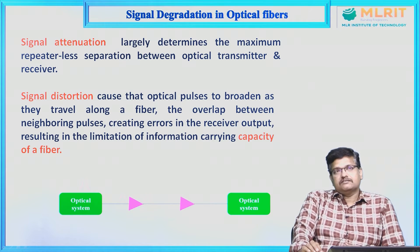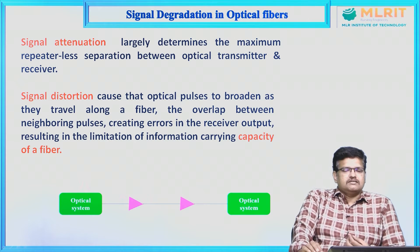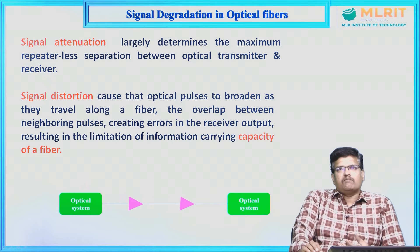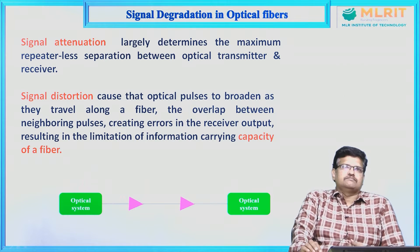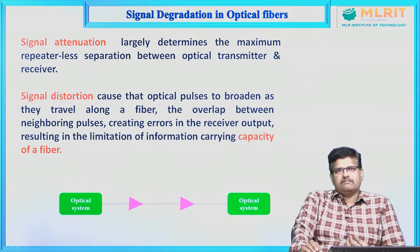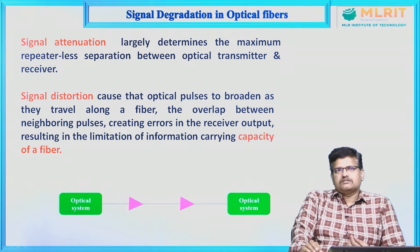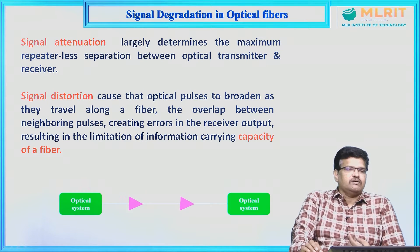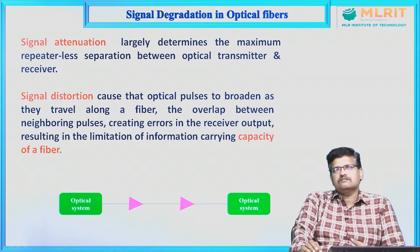Next is signal distortion. What happens is that some optical pulses are formed and they burden the signal. The overlap between pulses gives an aliasing effect and information may be lost. So signal degradation occurs in two ways: signal attenuation and signal distortion.